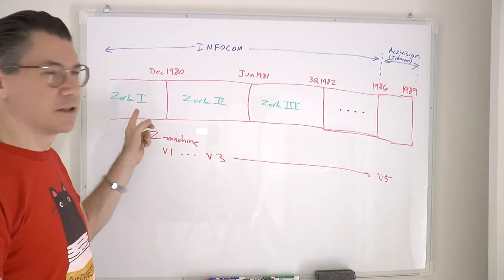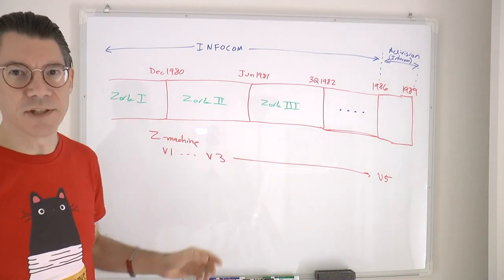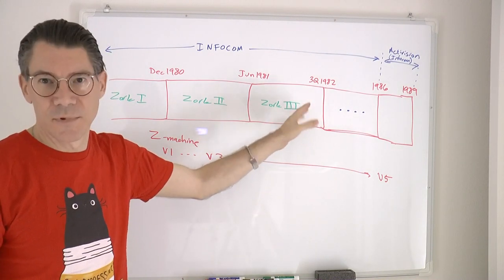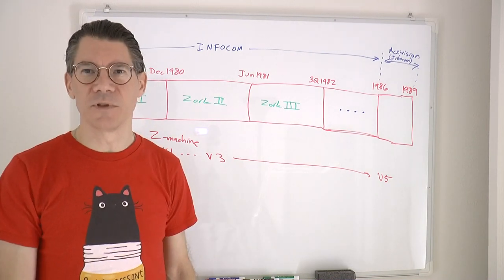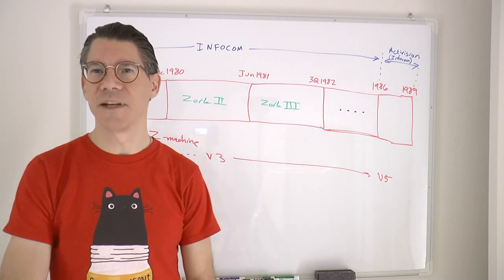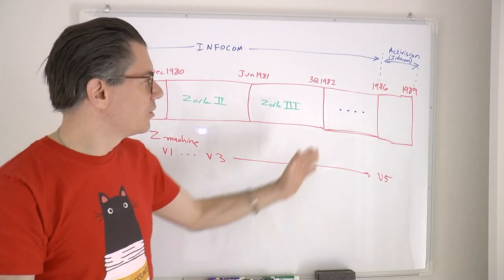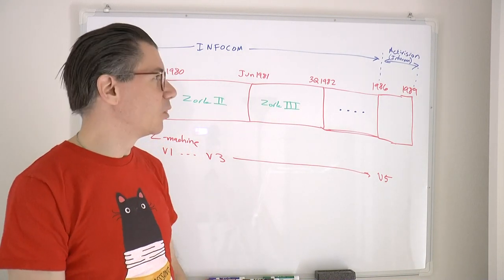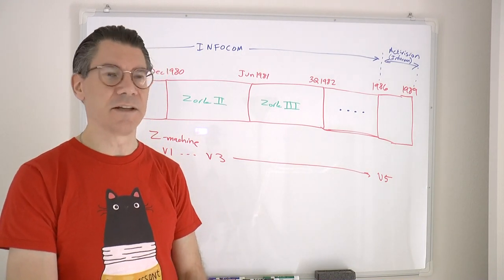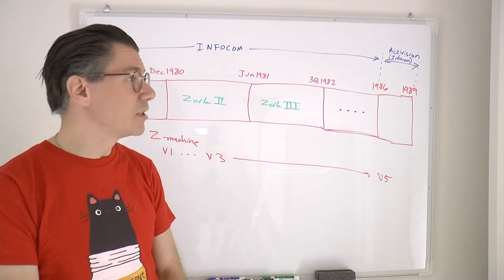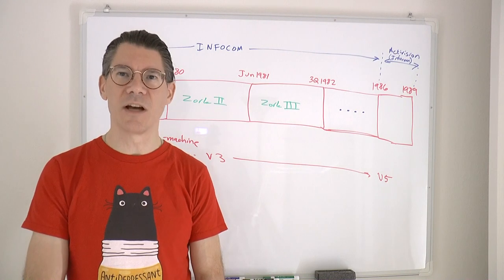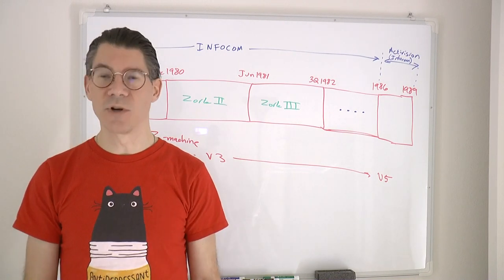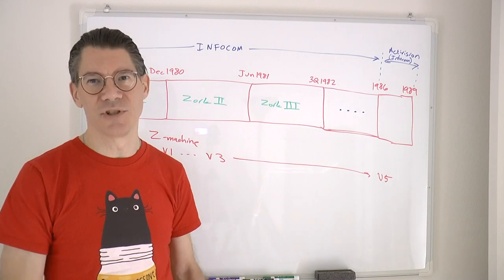From the beginnings of Infocom in 1980, starting with Zork 1, they released the rest of the adventure as Zork 2 and Zork 3, taking until basically the third quarter of 1982. At that time they released more games, including the text adventure version of Hitchhiker's Guide to the Galaxy. Until 1986, when they were bought out by Activision — that was pretty much the beginning of the end. Infocom became just a brand inside Activision. They did release a couple of other games until 1989, when Infocom as a brand was pretty much shut down. In 1997 there was one more release called Zork: The Undiscovered Underground, but it wasn't really Infocom — it was just trading on the name.